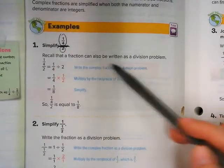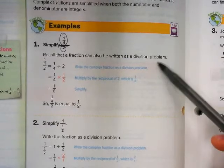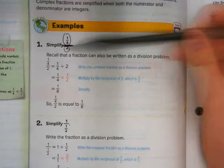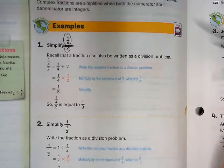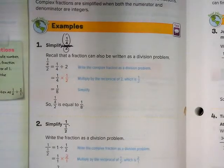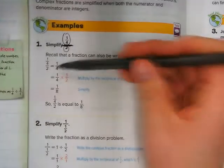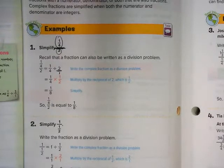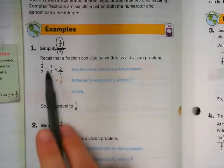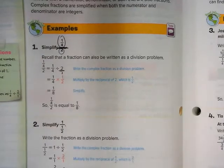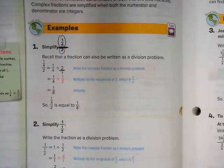Recall that a fraction can also be written as a division problem. We can do 1 4th divided by 2. When we divide by fractions, we want both of these to be fractions. So let's go ahead and draw over 1 under that 2. So we have 1 4th divided by 2 over 1.